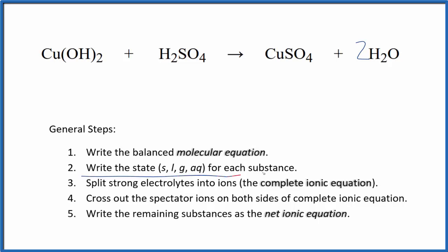Then we write the state for each substance. If you know your solubility rules, hydroxides in general are insoluble, especially this transition metal copper 2 hydroxide, that's insoluble, so we're going to call this a solid. For the sulfuric acid, this is a strong acid so it's going to be aqueous. It'll dissociate into its ions. Then we have copper 2 sulfate. Sulfates in general are soluble, and then we have water which is a liquid.